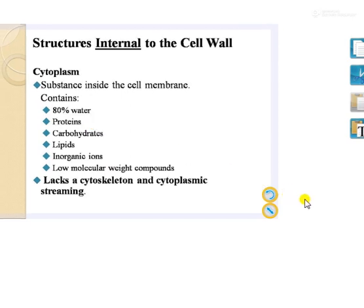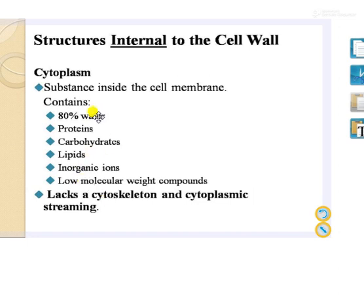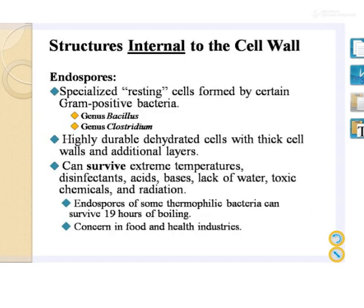The cytoplasm is present inside the plasma membrane, is liquid in nature, and contains 80% water, proteins, carbohydrates, lipids, and inorganic ions. It lacks a cytoskeleton and cytoplasmic streaming.